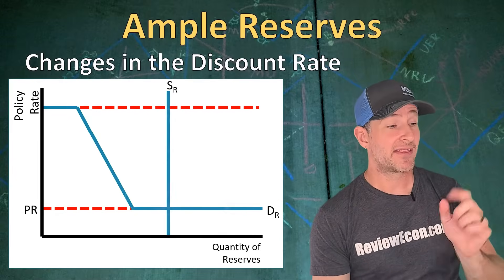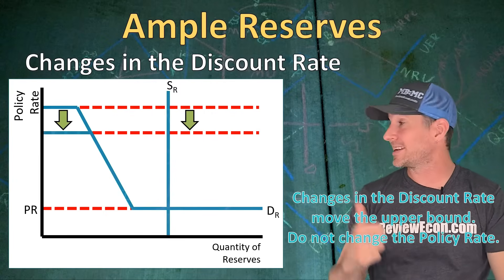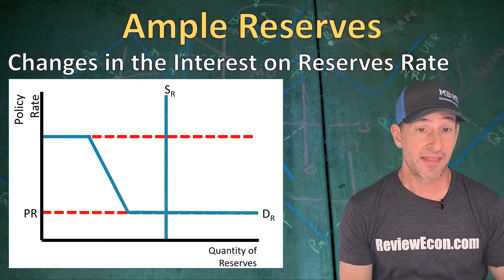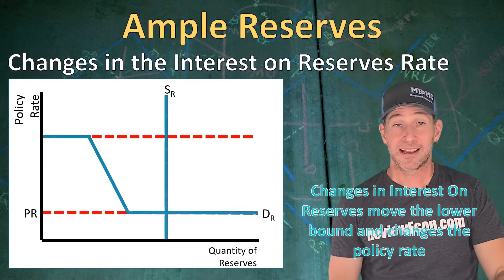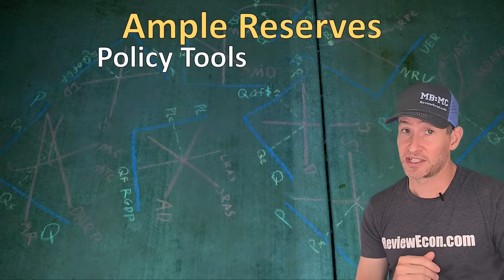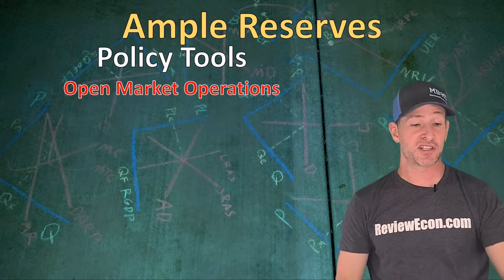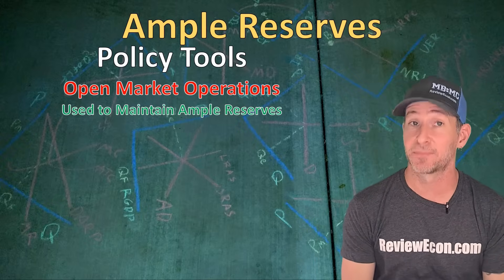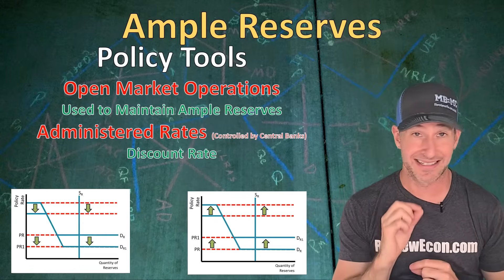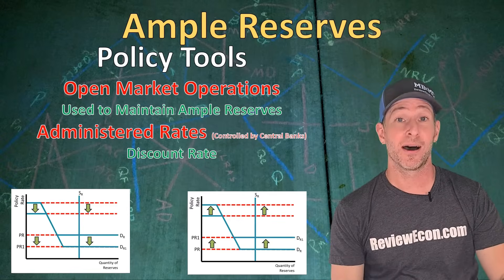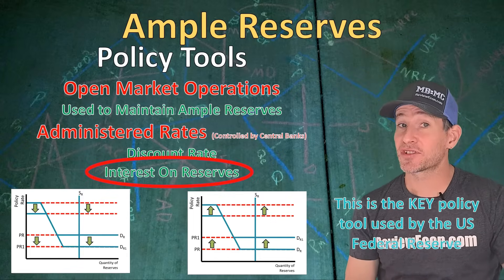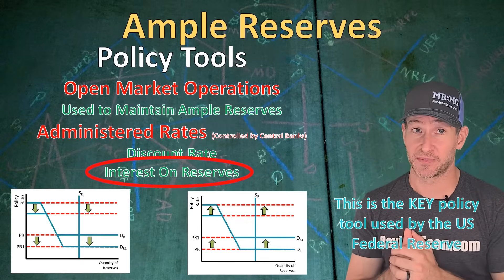The Federal Reserve can still change the discount rate, which moves the upper bound — but a change in the discount rate does not actually change the policy rate. Changes in the interest on reserves rate do impact the policy rate, because they shift the lower bound. An increase in the interest on reserves shifts the lower bound upward, increasing the policy rate. So the monetary policy tools for an ample reserves system are: open market operations (used to maintain ample reserves), the discount rate (moves the upper bound only), and the interest on reserves rate — the primary policy tool used by the Federal Reserve.